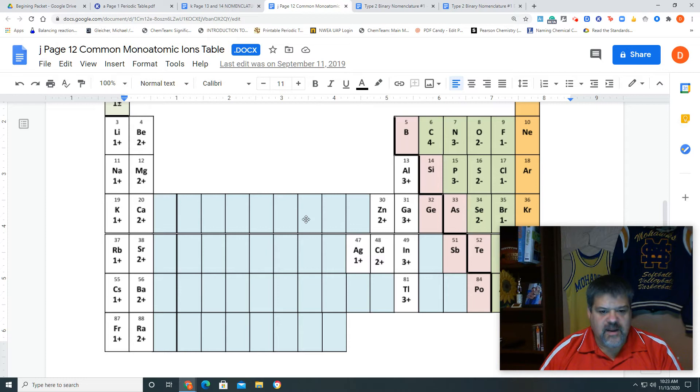Now, copper was over in here, so again, because it's blue, it's a type 2, and with it being a type 2, we don't know what the charge is, so we have to figure out what the charge is.